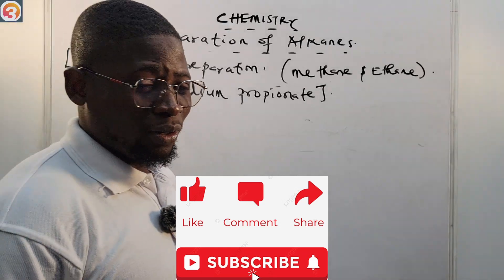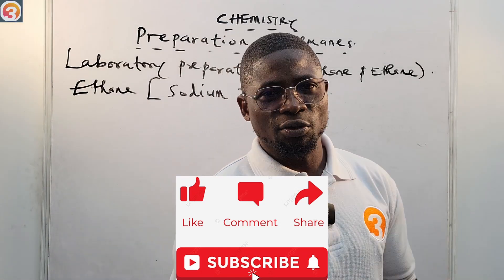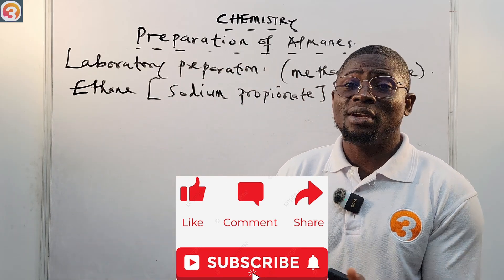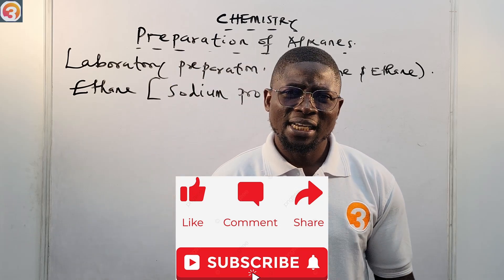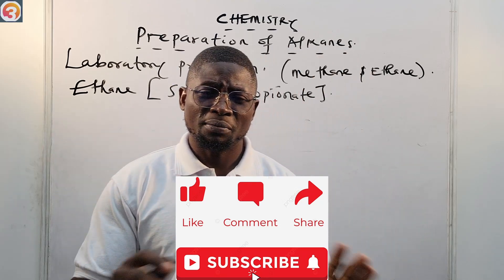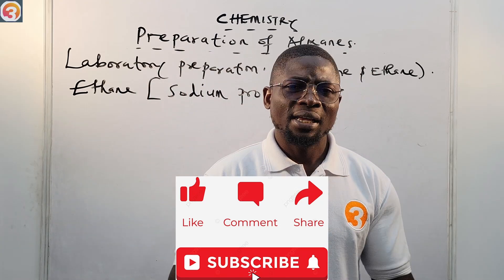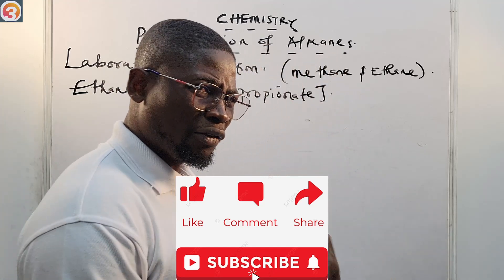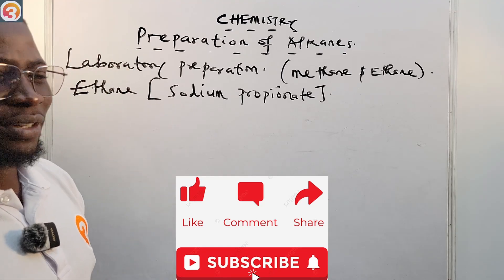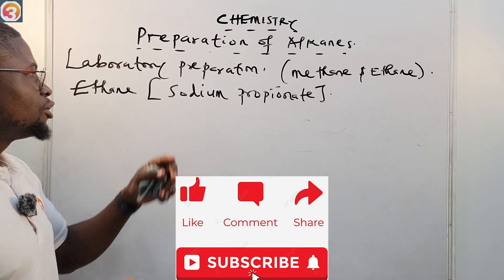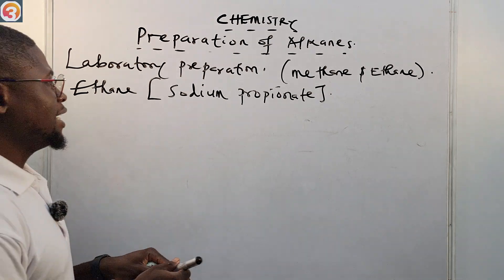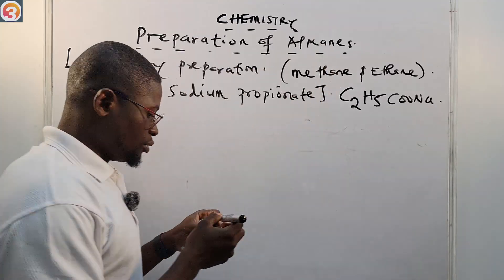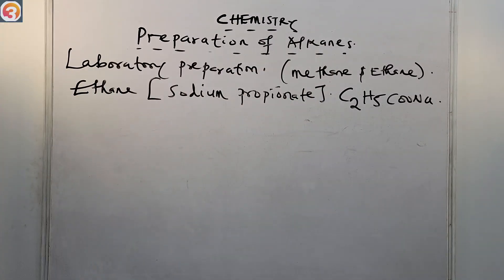Please do not forget to like this video — liking it will help other students find it. Also subscribe to the channel to get notifications whenever we release a new video. Subscription is completely free. Share this video and tell your friends about this channel. Now, sodium propionate is C₂H₅COONa.